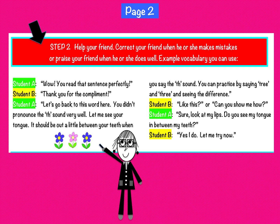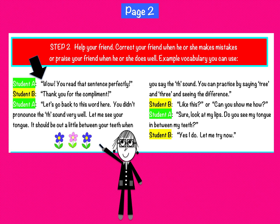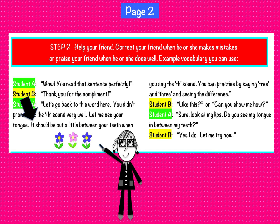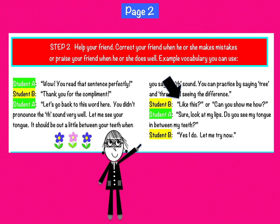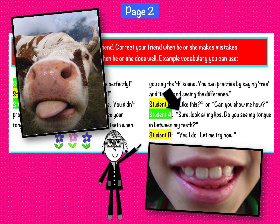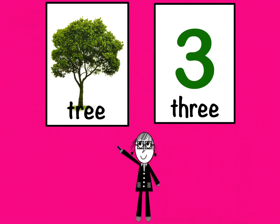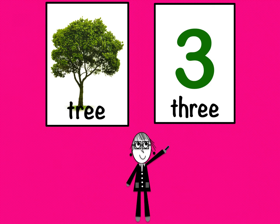Step 2: Help your friend. Correct your friend when he or she makes mistakes, or praise your friend when he or she does well. Example vocabulary: Wow, you read that sentence perfectly. Thank you for the compliment. Let's go back to this word here — remember, you didn't pronounce the TH sound very well. Let me see your tongue. It should be out a little between your teeth when you say the TH sound. You can practice by saying 'tree' and 'three' and seeing the difference. Can you show me how? Sure. Look at my lips. Do you see my tongue between my teeth? Yes, I do. Let me try now. Tree. Three. Tree. Three. Good work.